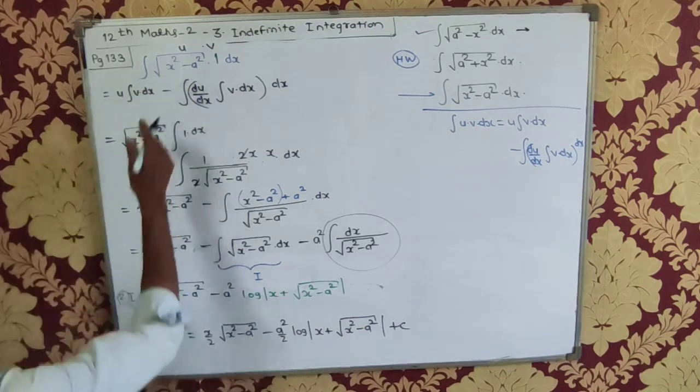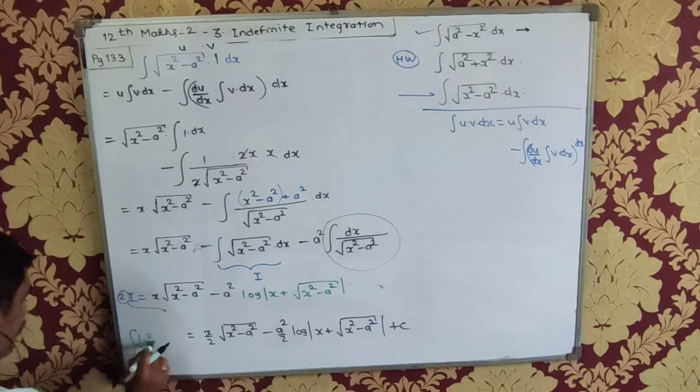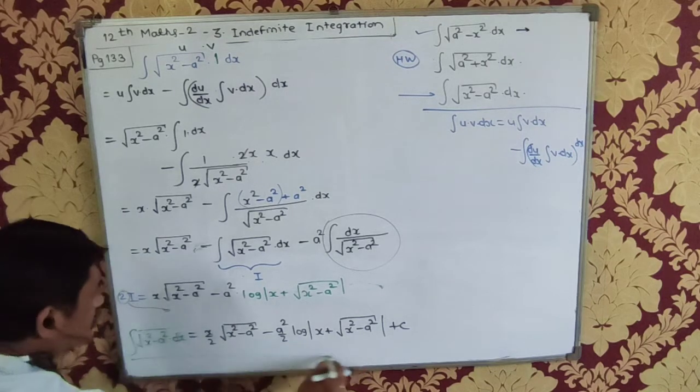What is this i? This i is integral. What is integration of √(x² - a²) dx. So this is the formula.